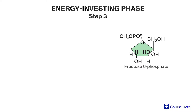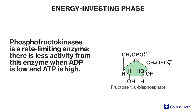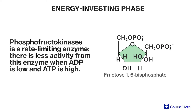Step three: the enzyme phosphofructokinase uses ATP to phosphorylate one end of fructose 6-phosphate. Phosphofructokinase is a rate-limiting enzyme, meaning that there is less activity from this enzyme when ATP levels are low and the concentration of ATP is high.